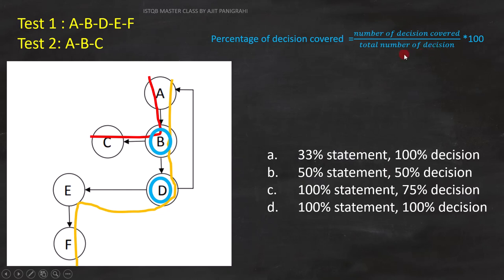Here, number of decisions covered is 3. Two conditions are covered for circle B and one condition covered for circle D.